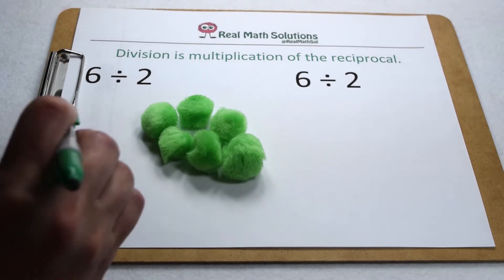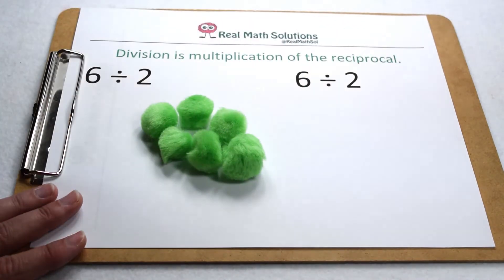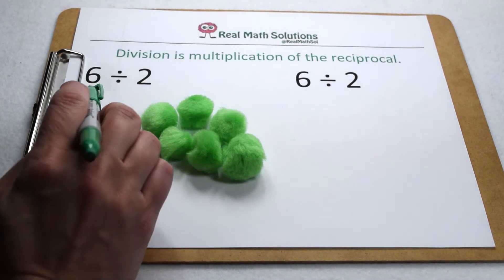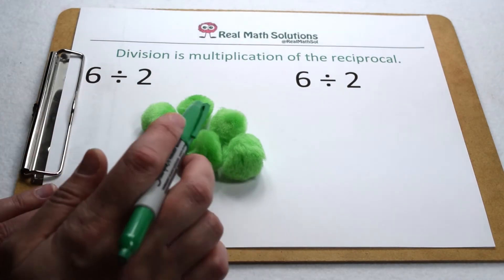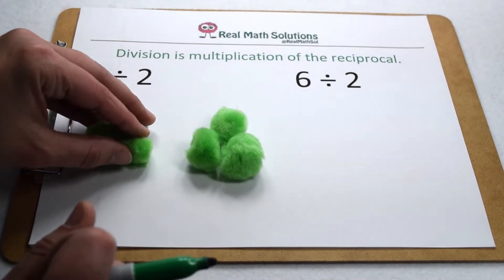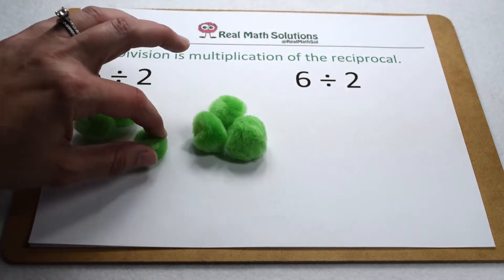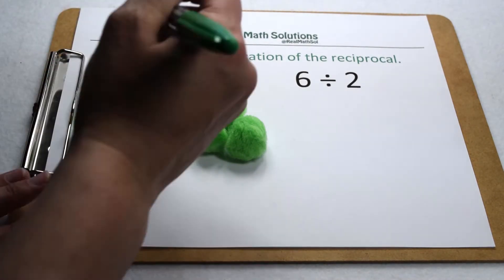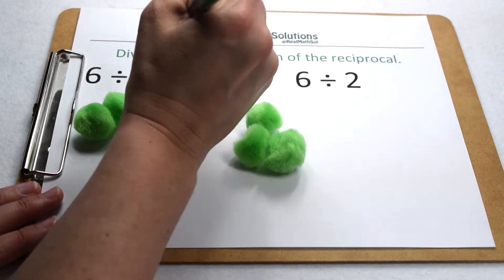This is because division is really multiplication of the reciprocal. We're going to revisit dividing with fractions in a moment to see how that works. But let's start with simply thinking about dividing. 6 divided by 2 means I have 6 items and I need to put them into 2 groups. When I do, that gives me 3 items in each group. So 6 divided by 2 gives me 3.